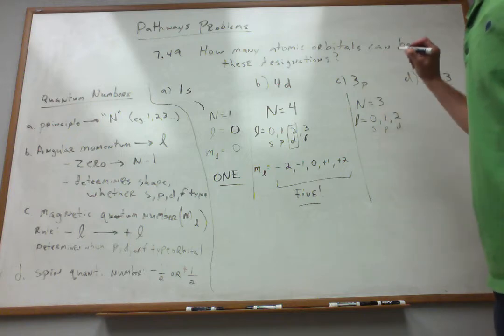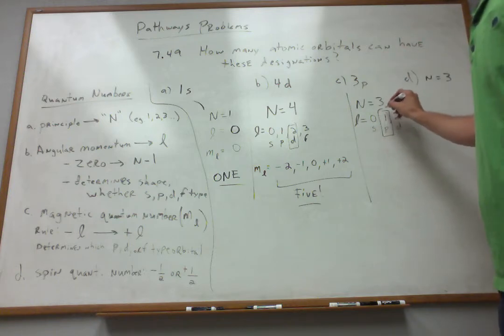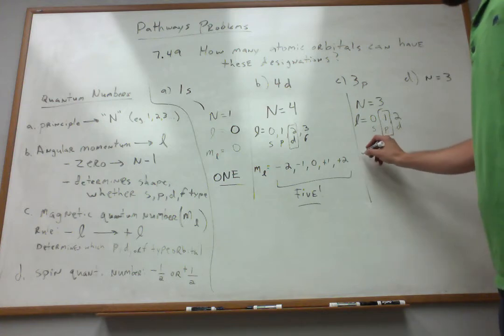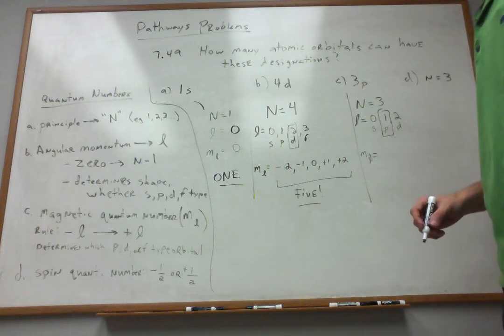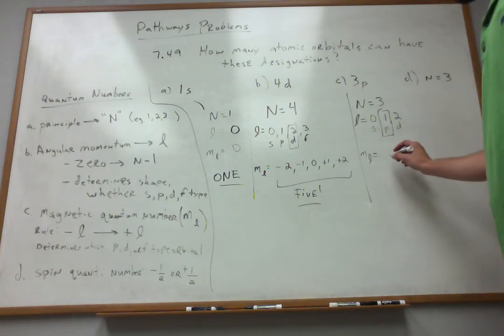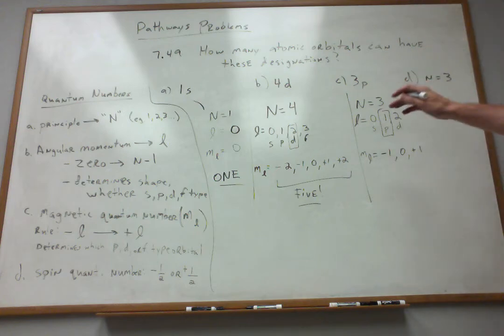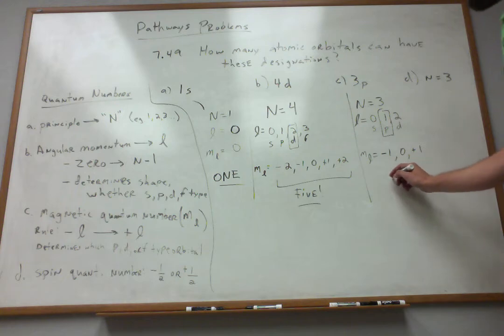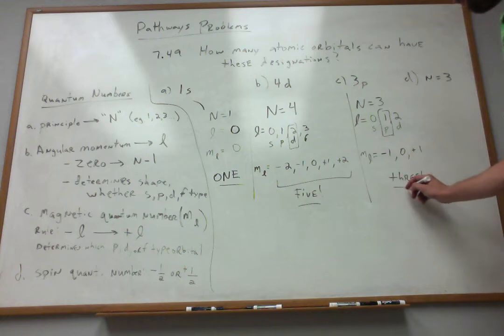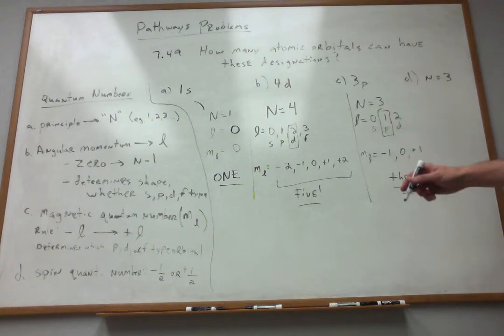But we're specifying specifically the p-type, where l is equal to 1. If that's the case, then what are my possible avenues for m sub l? Well, again, it's minus l to plus l. So it looks like minus 1 works, 0 works, because it's inclusive of 0, and plus 1 works. So if l is a p-type orbital, or 1, there are 3 possible orbitals that my electrons can exist in in the 3p level.